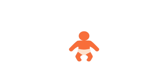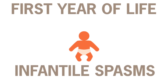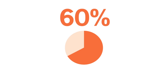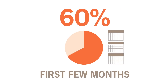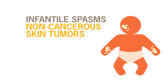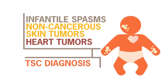For children with TSC, seizures often begin during the first year of life, very commonly with infantile spasms. In approximately 60% of cases, the initial onset occurs within the first few months. The presence of infantile spasms, in addition to other diagnostic features of TSC — such as non-cancerous skin tumors or heart tumors — can help lead to a TSC diagnosis.